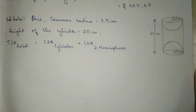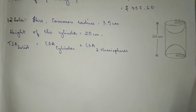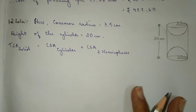Like I've mentioned before, you can, instead of writing CSA of two hemispheres, you can say surface area of a sphere, okay?